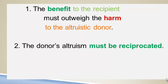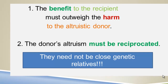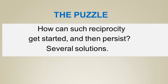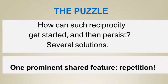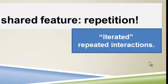There's one key observation that explains the excitement over this: organisms who engage in reciprocal altruism need not be close genetic relatives. This seems to free the evolution of cooperation and altruism from Hamilton's rule. The puzzle is how such reciprocity can get started and persist. What all proposed solutions share is an emphasis on repetition — or iteration. A key part of later models of reciprocity is iteration.